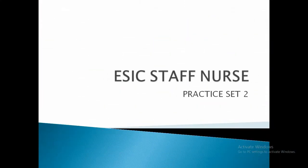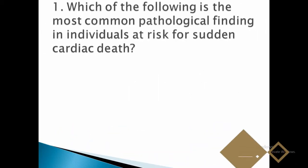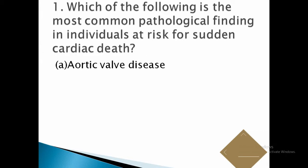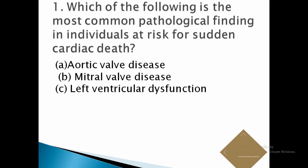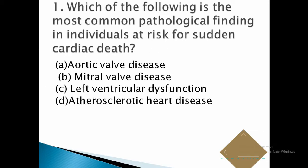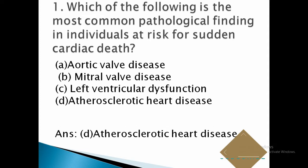ESIC Staff Nurse Practice Set Two. Question number one: which of the following is the most common pathological finding in individuals at risk for sudden cardiac death? Options: A. aortic valve disease, B. mitral valve prolapse, C. lateral ventricular dysfunction, D. atherosclerotic heart disease. The correct answer is D, atherosclerotic heart disease.